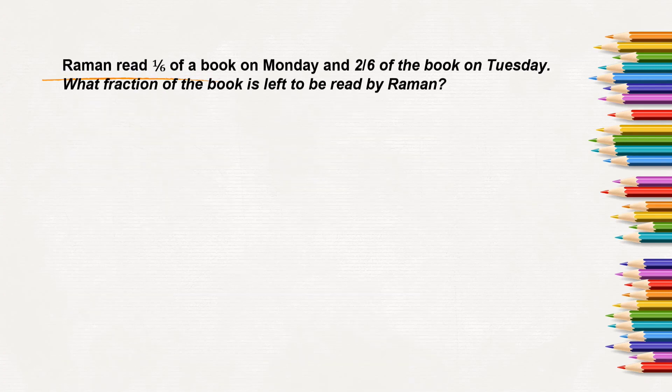Next question. Raman read 1 by 6 of a book on Monday and 2 by 6 of a book on Tuesday. What fraction of the book is left to be read by Raman? To find out what fraction of the book is left for Raman to read, we need to subtract the fractions which he has already read from one whole book. On Monday he read 1 by 6 and Tuesday 2 by 6 of the book.